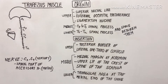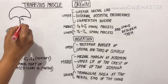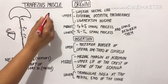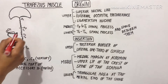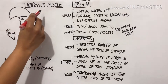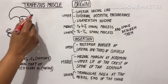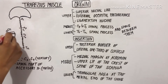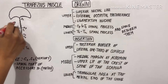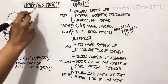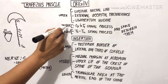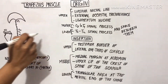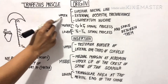Hey everyone, assalamualaikum, welcome back to a new lesson. Today I am going to discuss the trapezius muscle in detail. As we know, this is a back muscle connecting our upper limb to the vertebral column. This muscle has three parts: upper, middle, and lower.